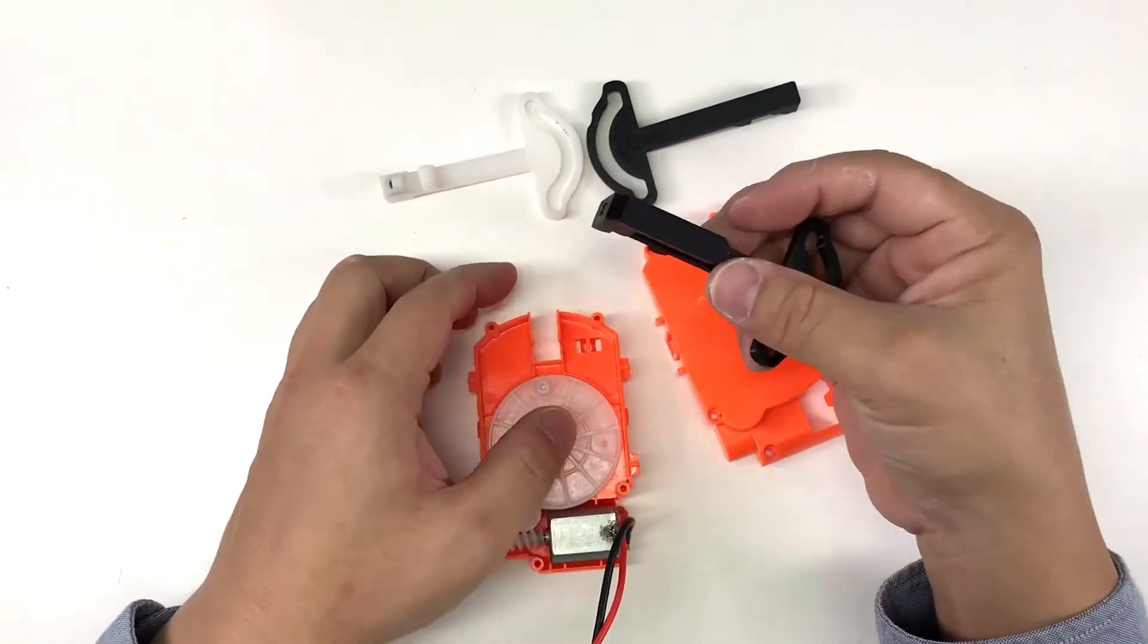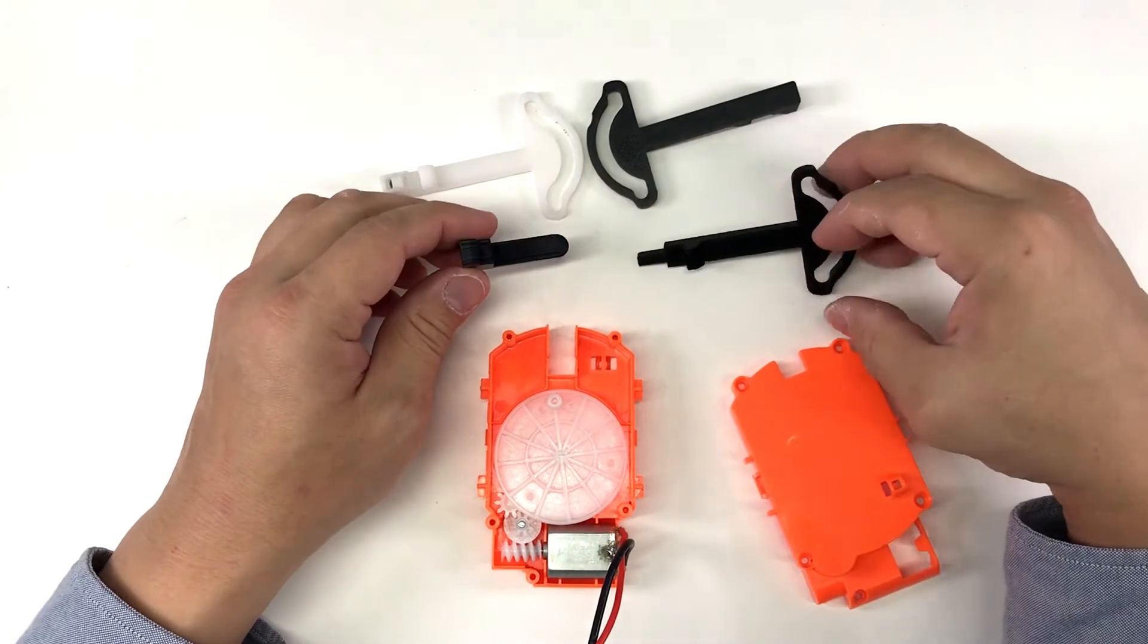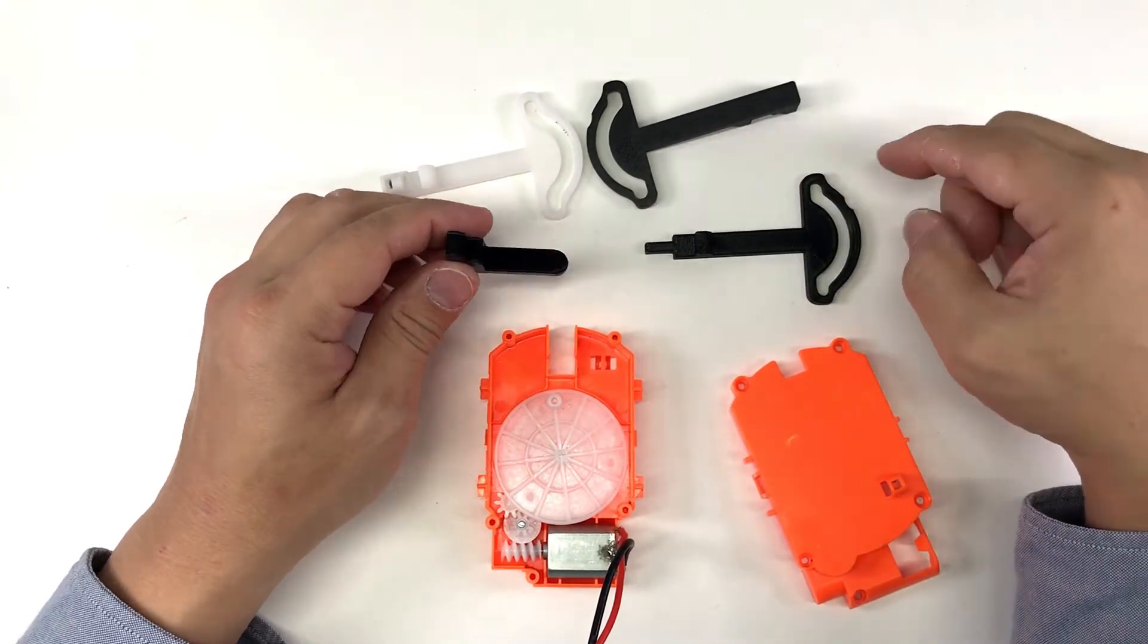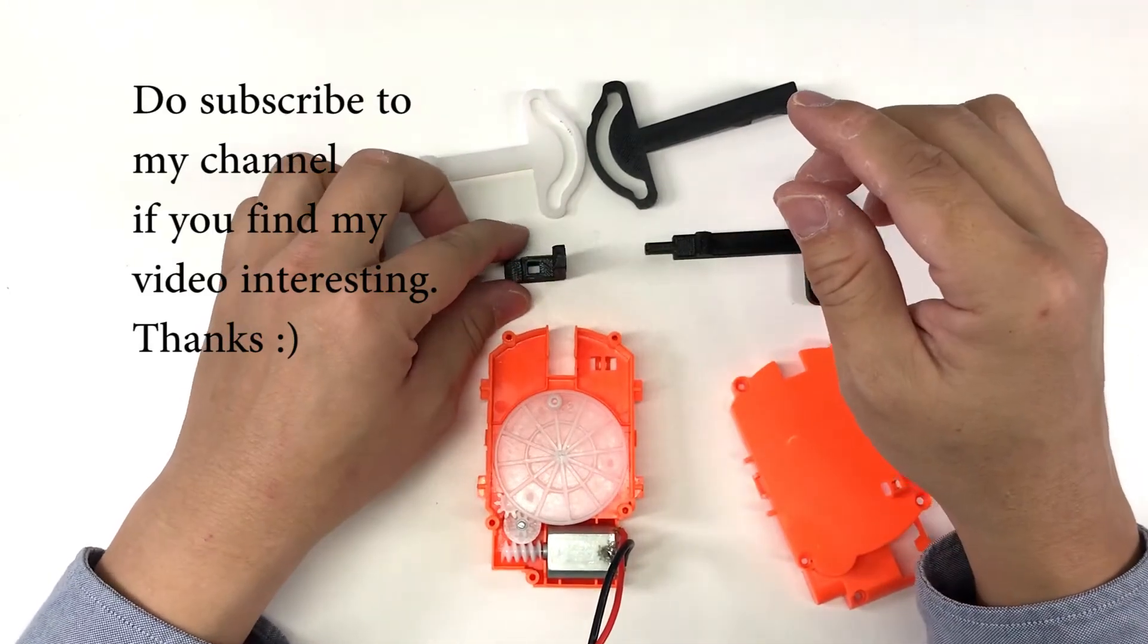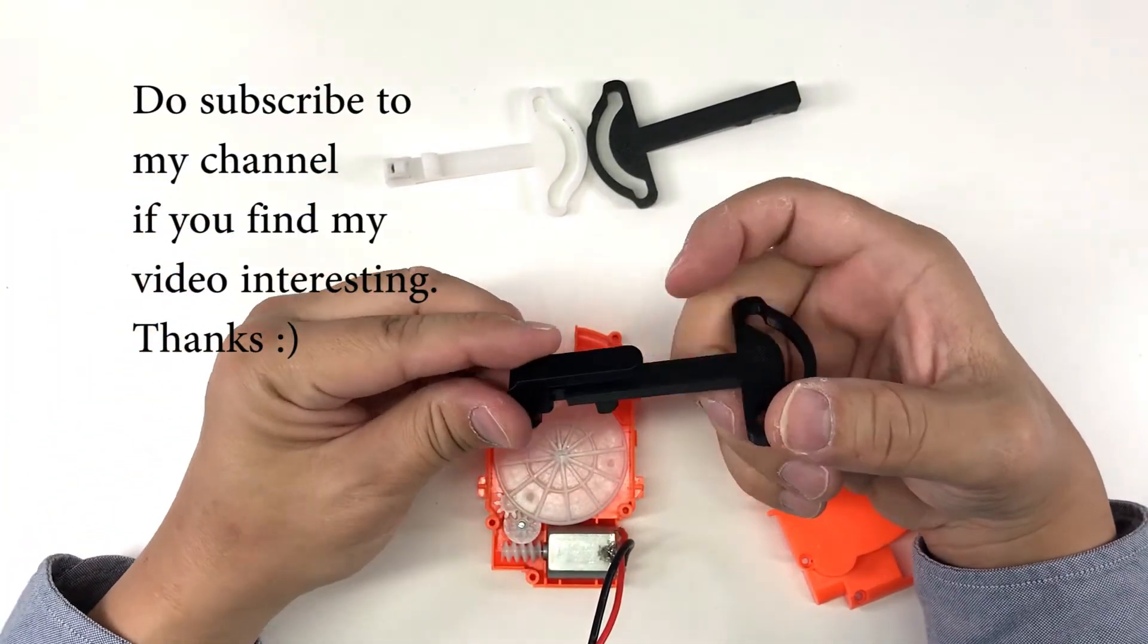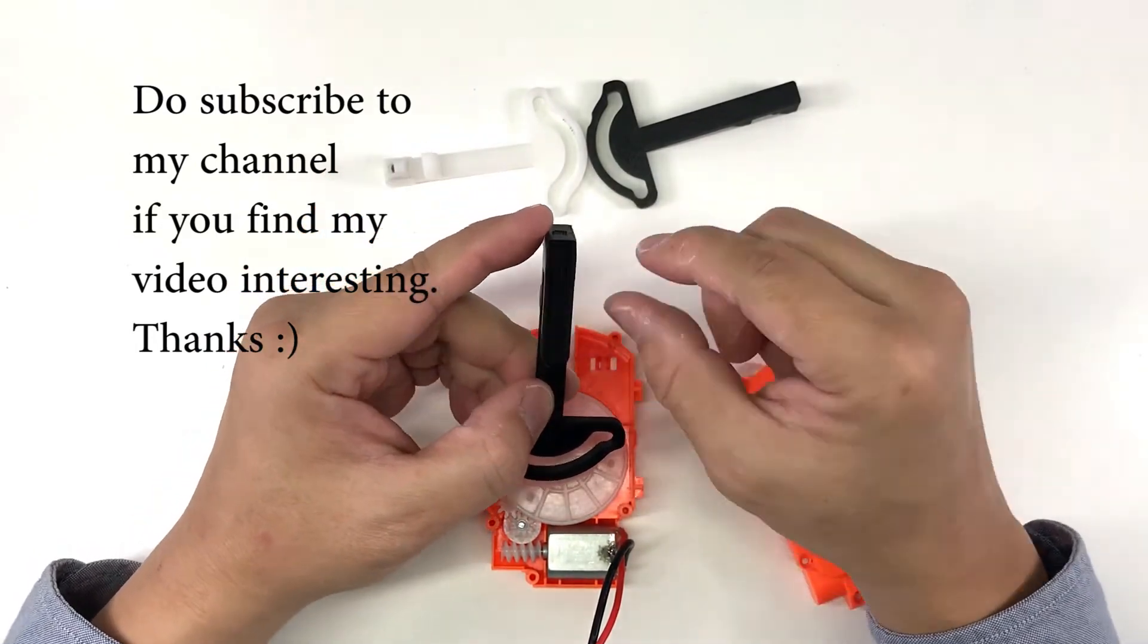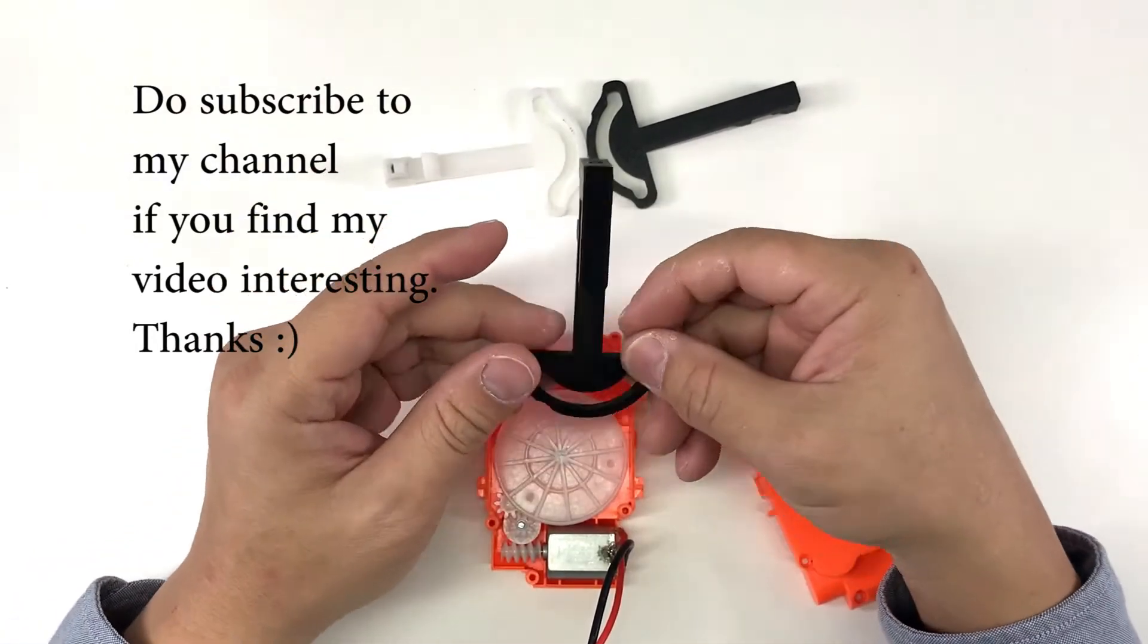Yeah, so for the one with this thing on top, basically it comes in two pieces. So you print this piece this way up, and then this piece you can print it this way up. Then you can just put some super glue and join them, and then you have something for you to maybe mount a microswitch to detect the pusher.